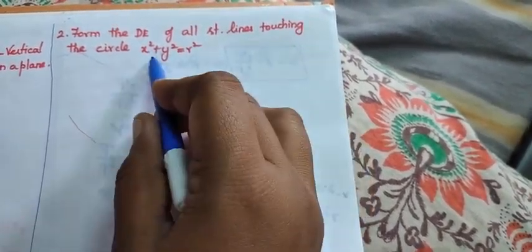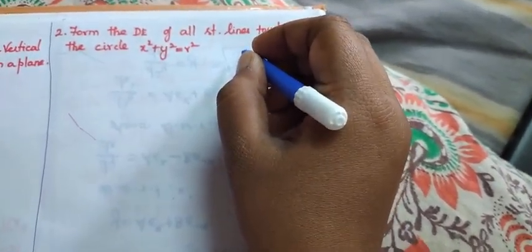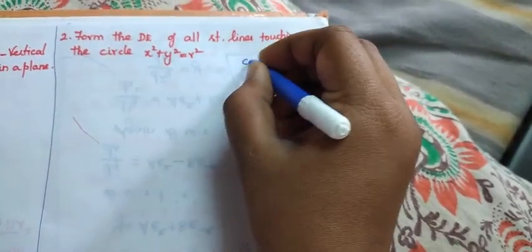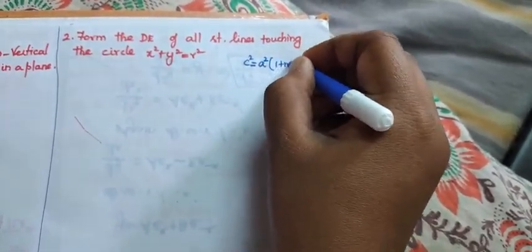The straight line touching the circle is nothing but the condition. You know in analytical geometry, the condition for the line touching the circle is c squared equals a squared into 1 plus m squared.